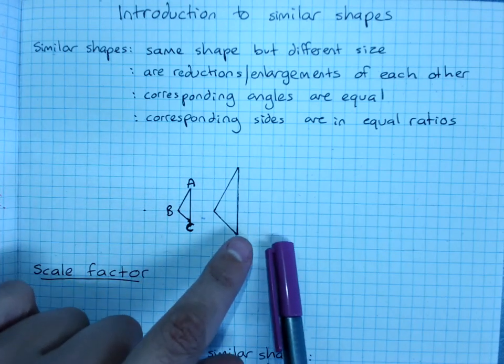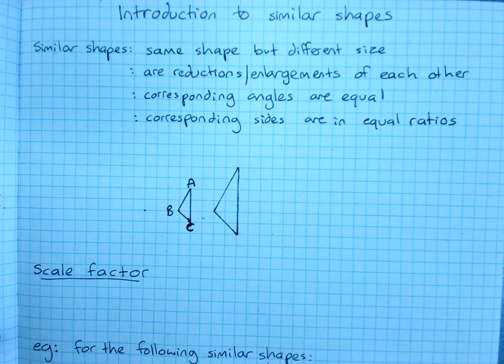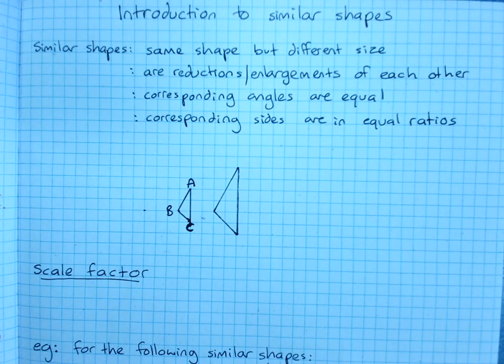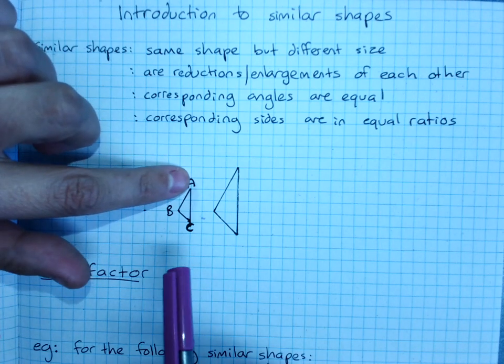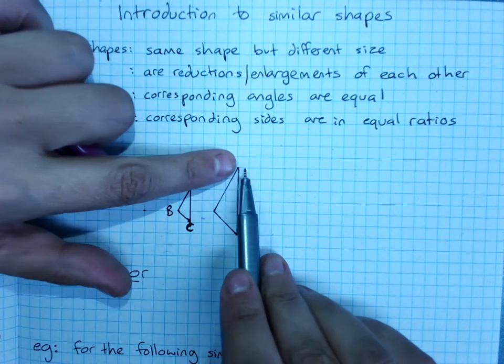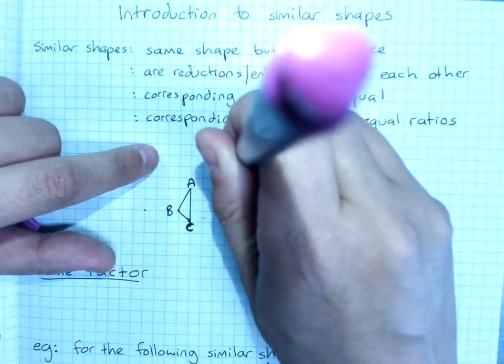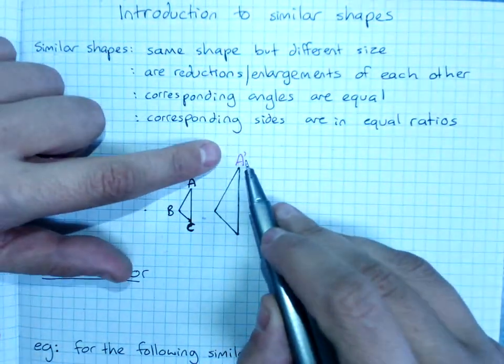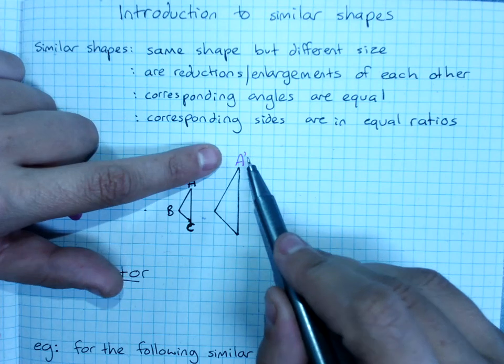And this copy is an enlargement of the original. You will often see labeling done saying, if this is angle A, this matching or corresponding angle is A with a little apostrophe, and that reads as A prime.